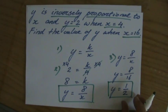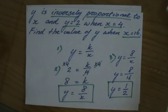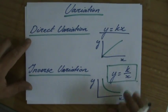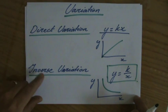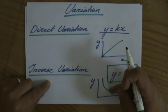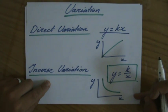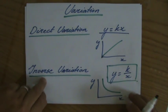And if I just grab this one back, the larger x gets with inverse proportion, the smaller y gets. It will never go to 0, but it goes really, really low.